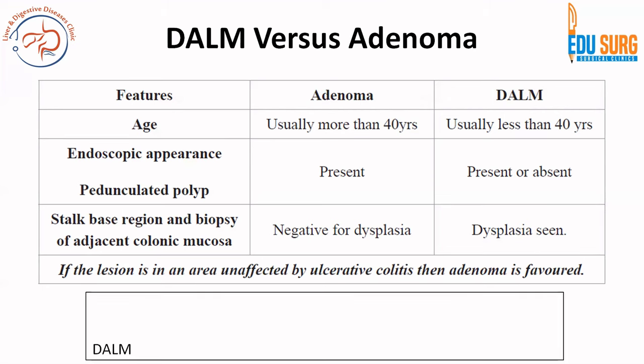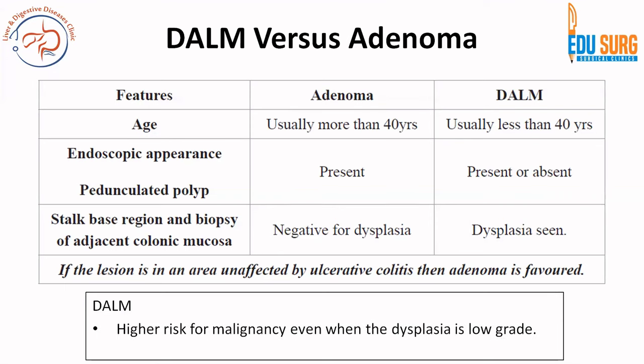This distinction is important because DALM carries a higher risk for malignancy even when the dysplasia is low grade. Therefore, DALM becomes an indication for surgery, whereas an adenoma by itself does not. So we have seen two important distinctions: differentiating ulcerative colitis from Crohn's disease, and differentiating DALM from adenoma.